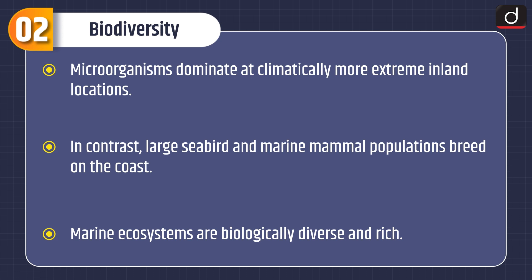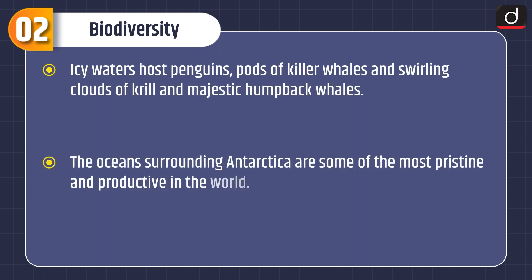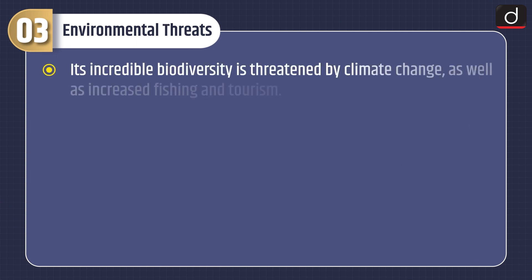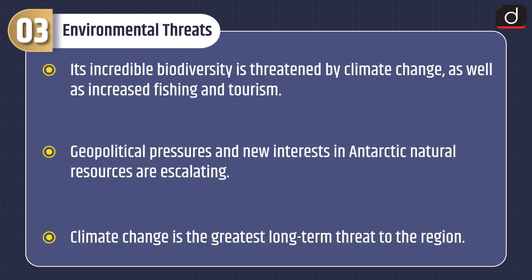Microorganisms dominate at climatically more extreme inland locations. In contrast, large seabird and marine mammal populations breed on the coast. Marine ecosystems are biologically diverse and rich — icy waters host penguins, pods of killer whales, swirling clouds of krill, and majestic humpback whales. The oceans surrounding Antarctica are some of the most pristine and productive in the world.